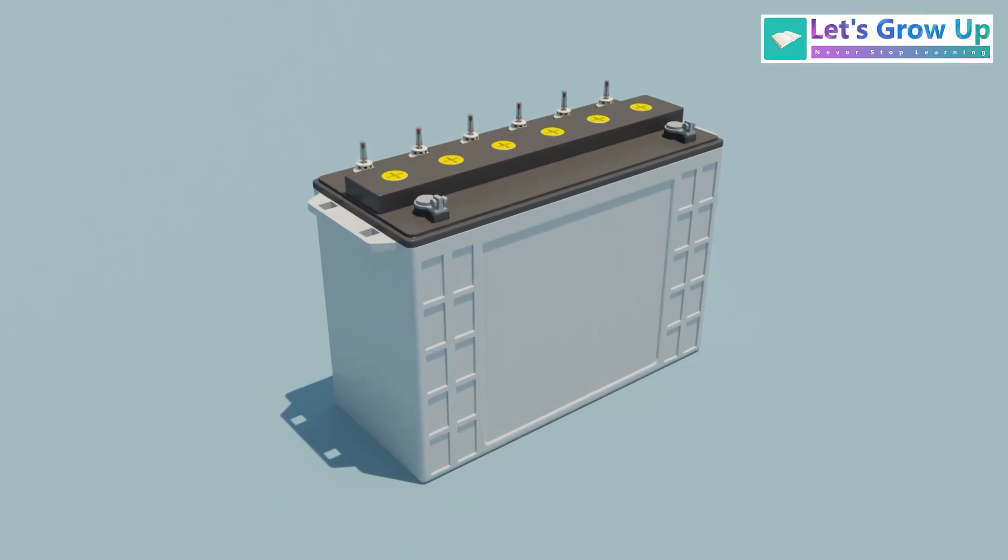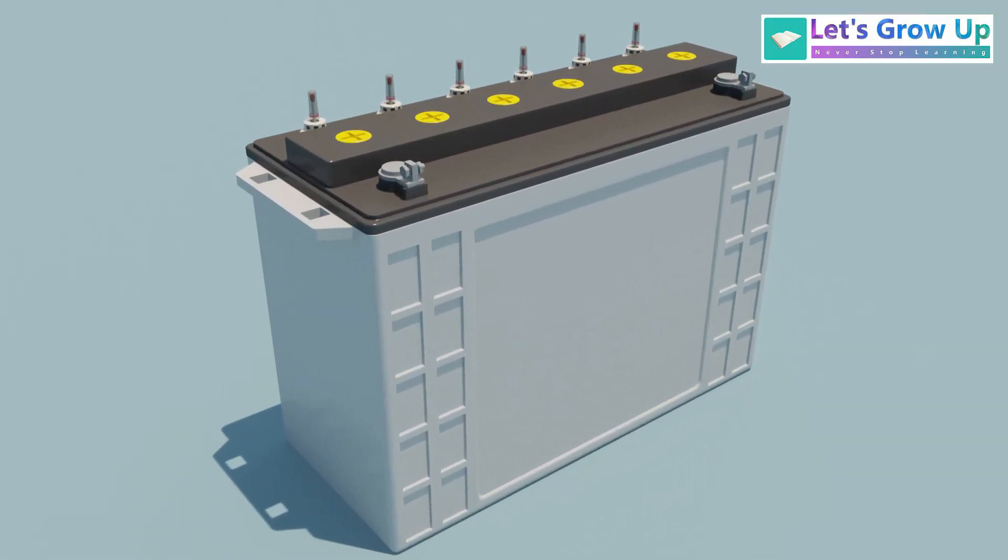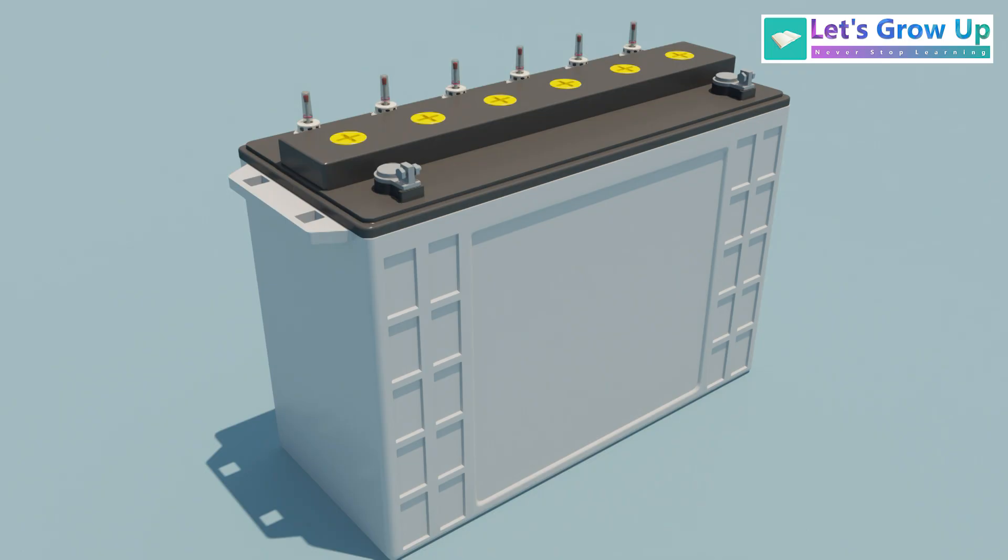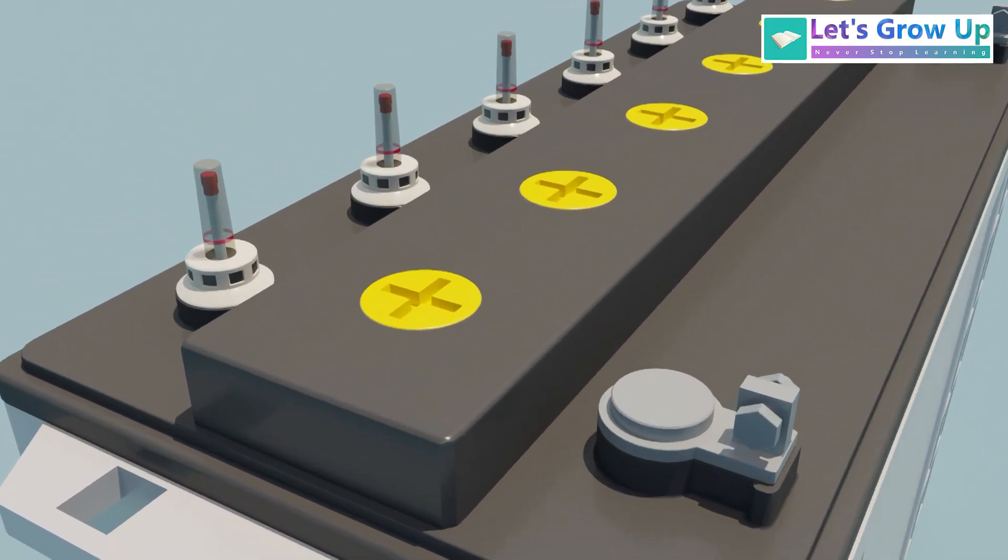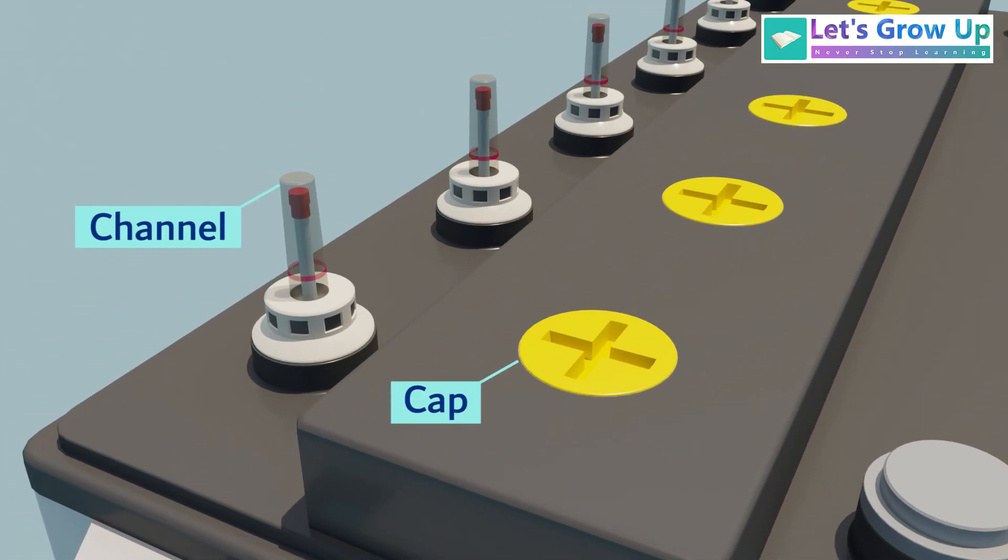First, if you look at the top of most lead-acid batteries, you'll typically see two prominent terminals, a positive one and a negative one. Also on top, you'll usually find ventilation in some form, often small caps or a channel. This allows for the safe release of gases that can be produced during the charging process.